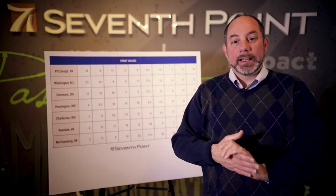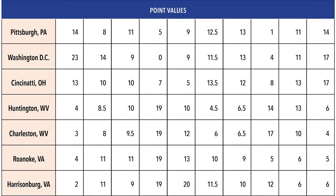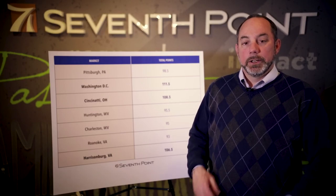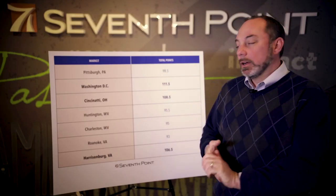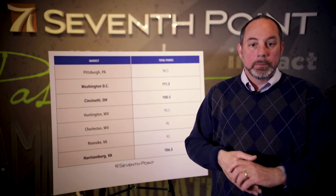Once you've translated your indexes into point scores, you're almost done. You'll end up with a chart that has numeric values in every square — the point values that each market gets for every one of the data points. Then you add them all together and see which market has the highest point value. For example, Pittsburgh has 98.5 points, whereas Washington DC has 111.5 points. The markets with the highest point value become the markets you want to advertise in because they'll be the most effective, whereas markets with lower point values such as Roanoke and Charleston are the ones to avoid because they'll be the least effective.